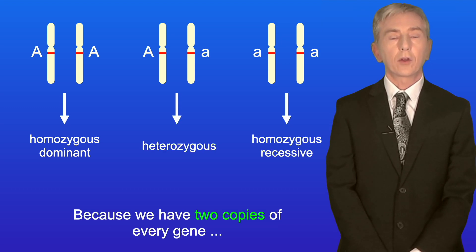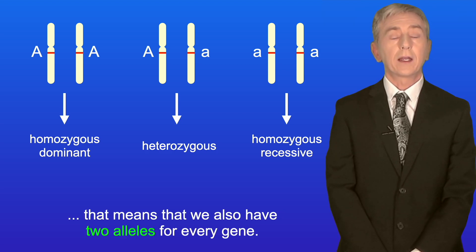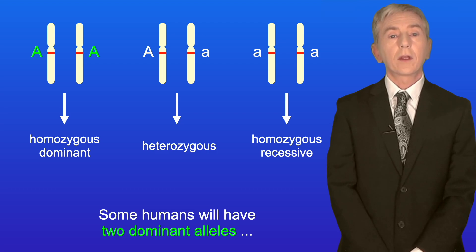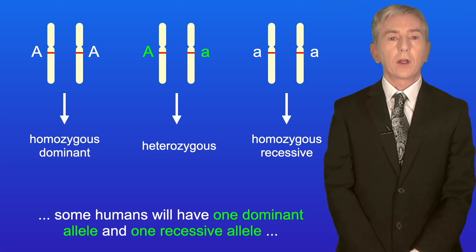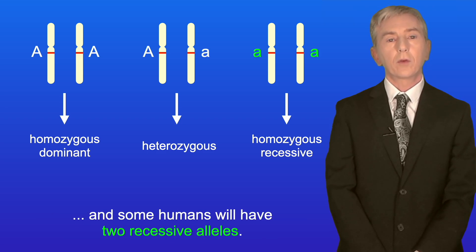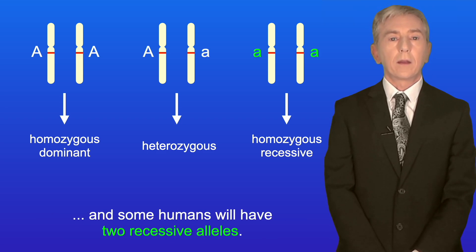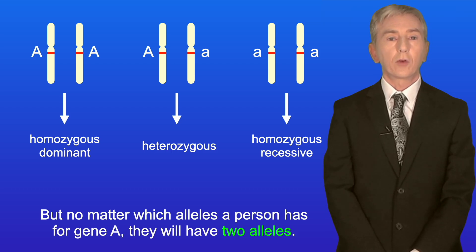Now because we have two copies of every gene, that means that we also have two alleles for every gene. So some humans will have two dominant alleles, some humans will have one dominant allele and one recessive allele, and some humans will have two recessive alleles. But no matter which alleles a person has for gene A, they will have two alleles.